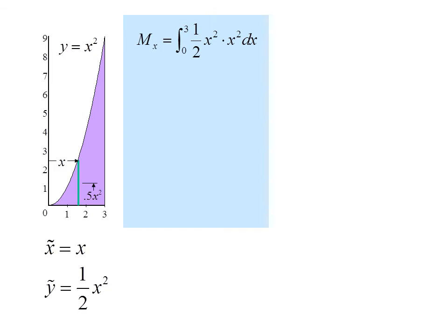The moment about the x-axis is the integral from 0 to 3 of one-half x² times x² dx. One-half x² is the distance to the centroid, and x² dx is the area of the strip. So I simplify, find the antiderivative, substitute 3 in for x, and I get the moment about the x-axis is 243 tenths.